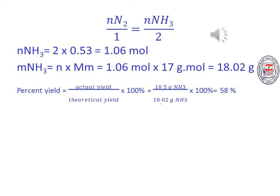Then write the mole ratio: moles of nitrogen divided by coefficient 1 equals moles of ammonia divided by coefficient 2. Moles of ammonia equal 2 times 0.53, equal 1.06 moles. Find the mass of ammonia, which equals number of moles times molar mass, equal 18.02 grams. Percent yield equals actual yield divided by theoretical yield times 100%, equal 10.5 divided by 18.02 times 100%, equals 58%.